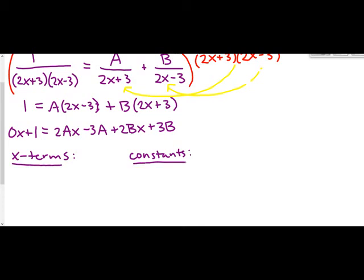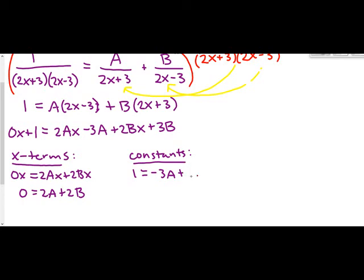From the x terms: 0x = 2Ax + 2Bx, which simplifies to 0 = 2A + 2B. From the constants: 1 = −3A + 3B. Now we have a system of two equations with two unknowns.